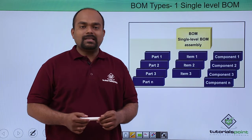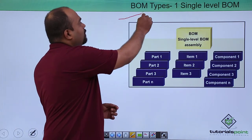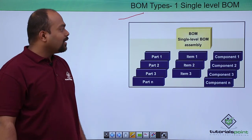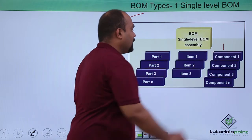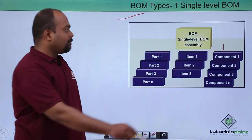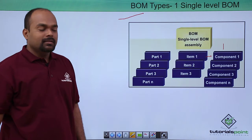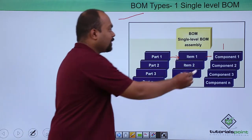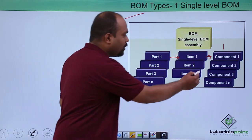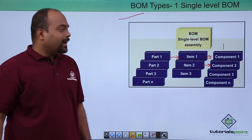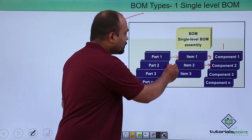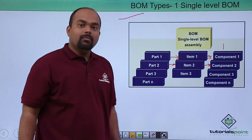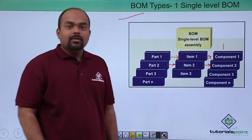The first type is a single level BOM. A single level BOM has one component, and that component is having one part attached to it. Suppose there is a second component — that second component is having item 2 as its part, and part number 2 will be assigned to that item.